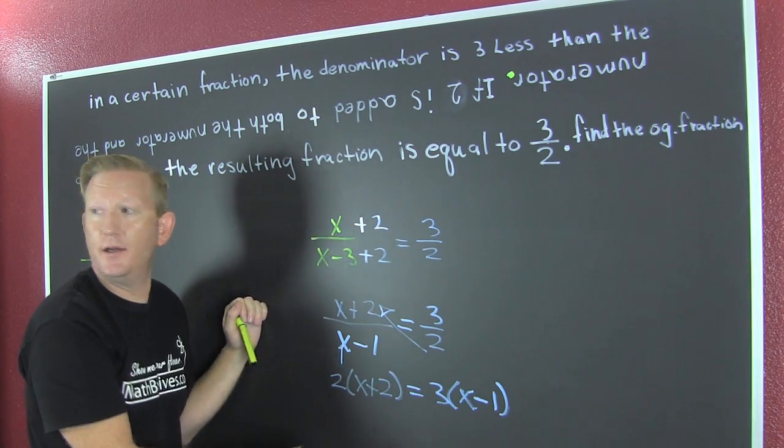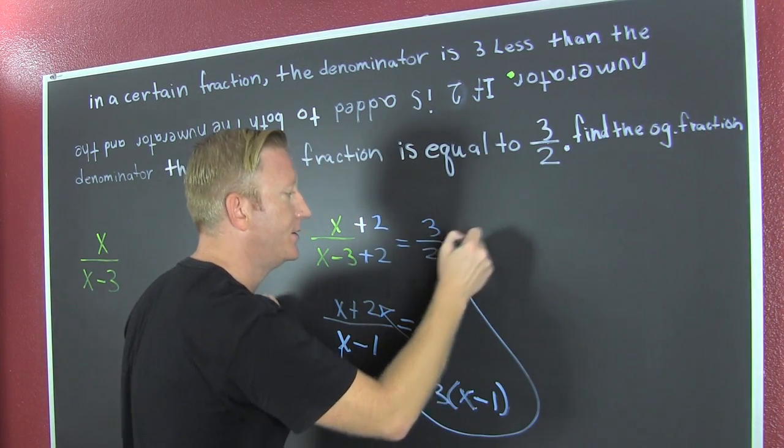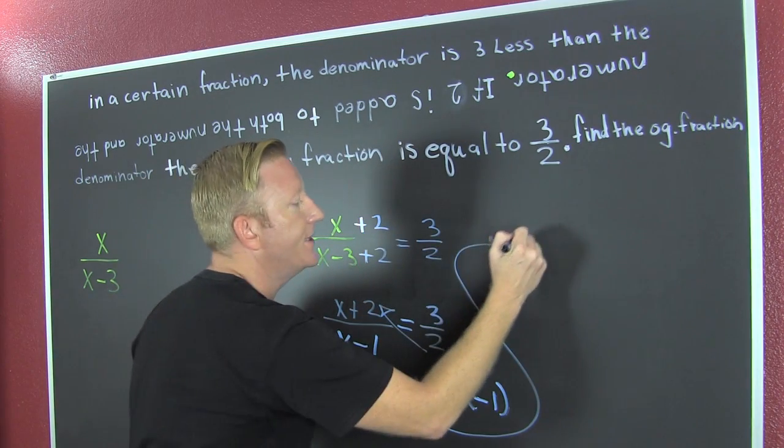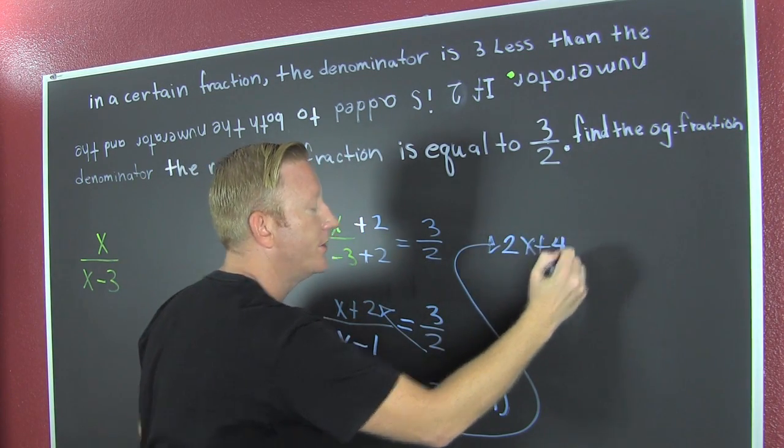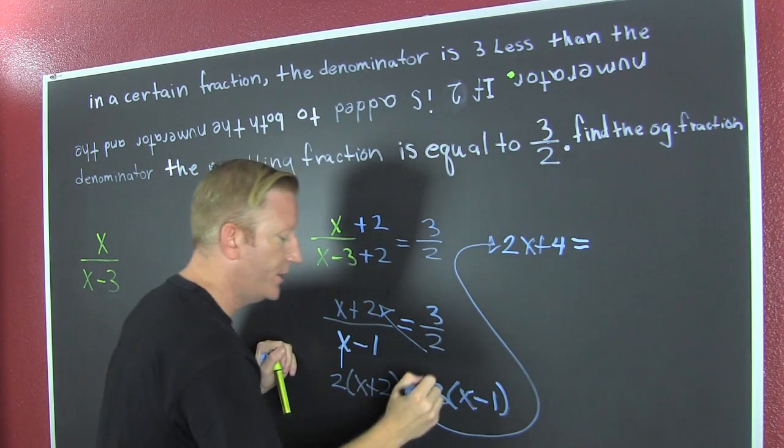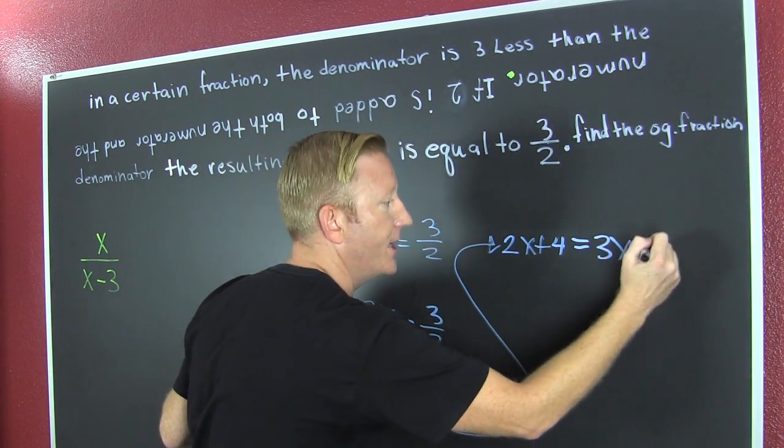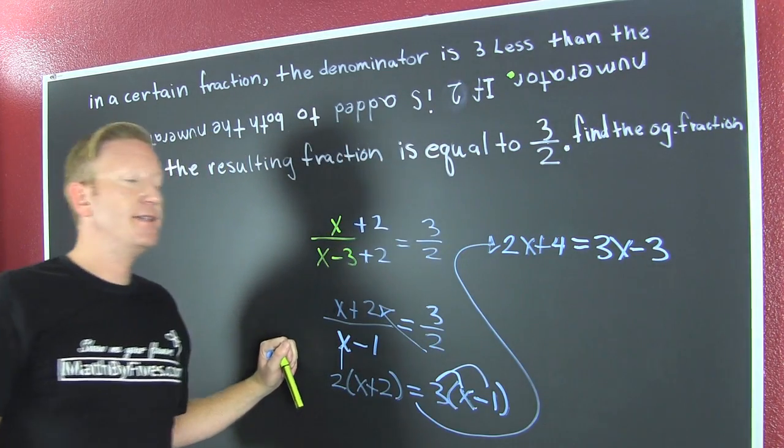All right. Since I'm getting a little low, I'm gonna take it to the side. So, that's two x plus four. Sure. And then that's going to be equal to three x minus three.